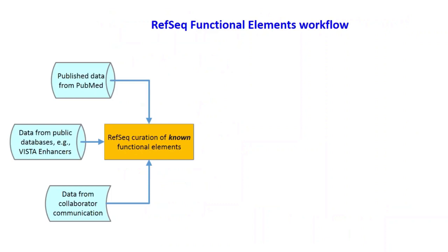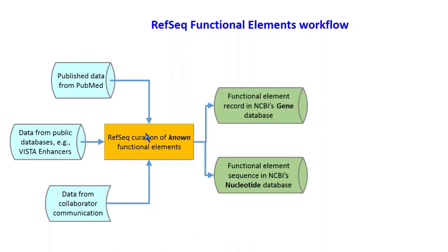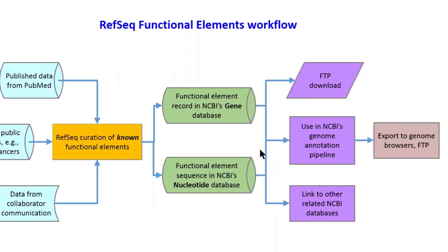The project overview has a workflow where we take known elements that have been well-defined and experimentally validated in the literature. We take data from PubMed to curate the records, as well as data from certain databases such as the Vista enhancer database that has experimentally validated enhancers. We also use data from collaborators to enhance that experimentally validated data when necessary. The curated records are of two types: one is a record in the gene database containing a lot of metadata, and we also produce a RefSeq record in NCBI's nucleotide database. Those records are then released via FTP downloads, used in NCBI genome annotation, and available on genome browsers.